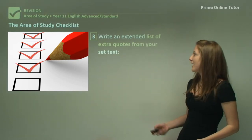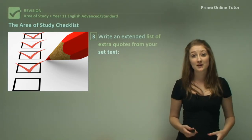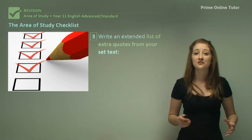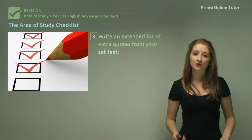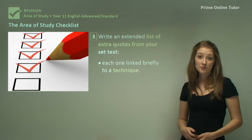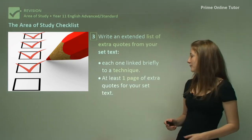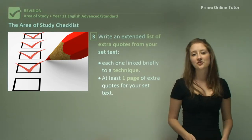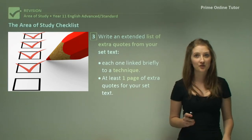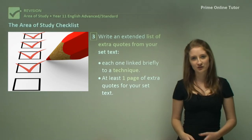The third element is to write an extended list of extra quotes from your set text. This is really important because it means you can go on to provide analysis, and this can provide a really good skeleton structure for any future essays. What you need to do is write each quote down and then link it briefly to a language technique. This should be at least one page of extra quotes for your set text, and it's going to be an invaluable resource when you come back to it later and need to refresh your memory of the text.